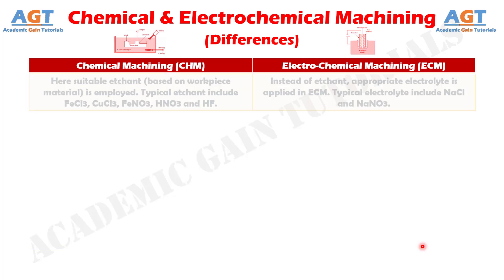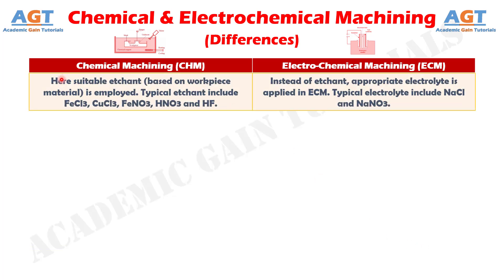Difference No. 6: In chemical machining, a suitable etchant based on workpiece material is employed. Typical etchants include ferric chloride, copper chloride, ferric nitrate, nitric acid, and hydrogen fluoride, whereas instead of etchant, an appropriate electrolyte is applied in electrochemical machining. Typical electrolytes include sodium chloride and sodium nitrate.